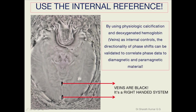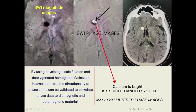Here in this picture, veins are appearing black, suggesting it is a right-handed system. On the SWI magnitude image you can see an area of blooming. The corresponding area on phase images shows bright signal, indicating it has calcium and it is a right-handed system. On CT you can see this calcification clearly rather than blood product.